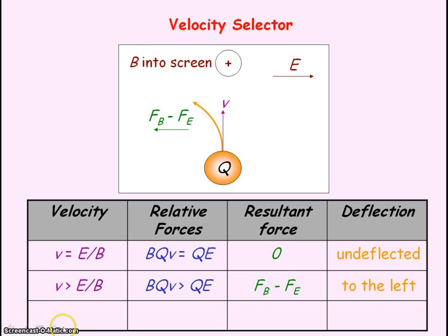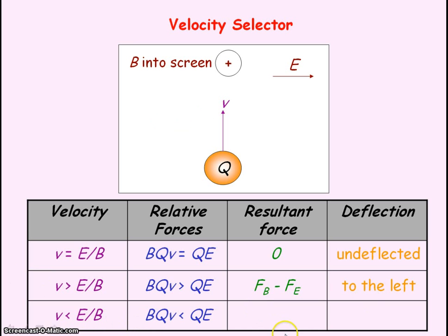If the velocity of the charged particle is less than E divided by B, the magnetic force will now be less than the electric force. So the resultant force on the charged particle will now be the electric force minus the magnetic force. So there'll be a net deflection to the right due to the larger electric force.